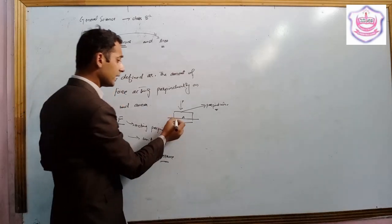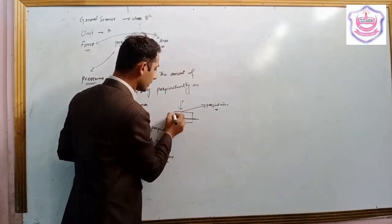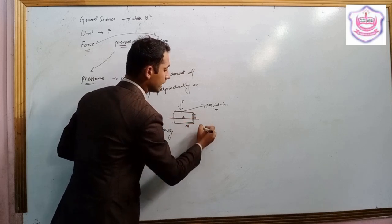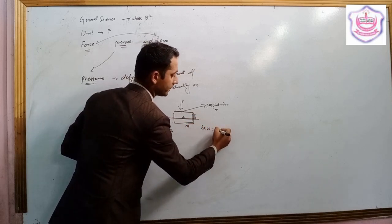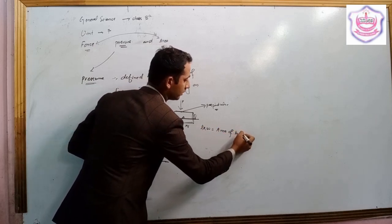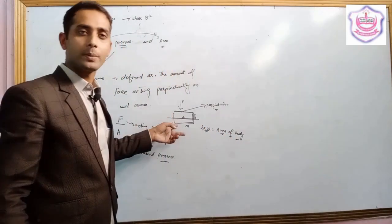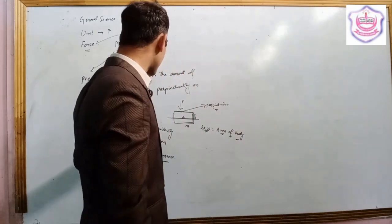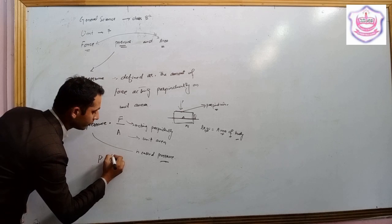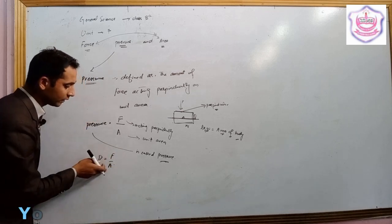The area of a surface is length multiplied by width. The amount of force acting perpendicularly on a unit area is called pressure. From the relation: P is equal to force acting on a unit area, so P equals F divided by A.